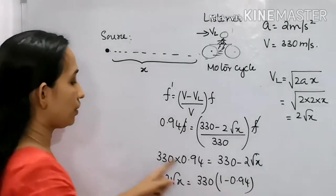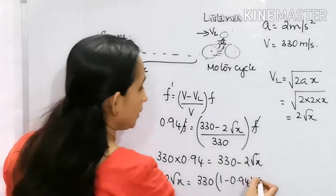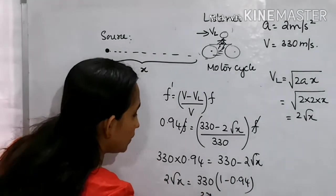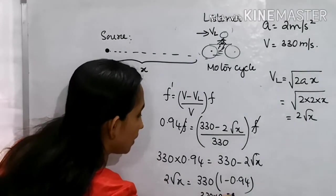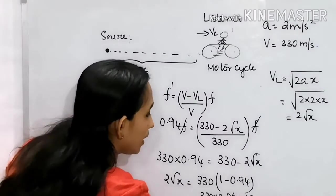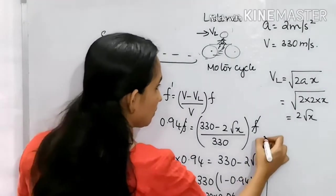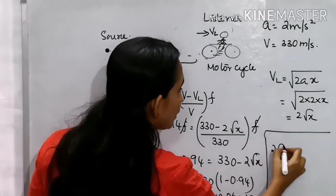2 root x is equal to 330 into 1 minus 0.94. We will multiply, which is 330 into 0.06. We can rewrite this as 19.8.